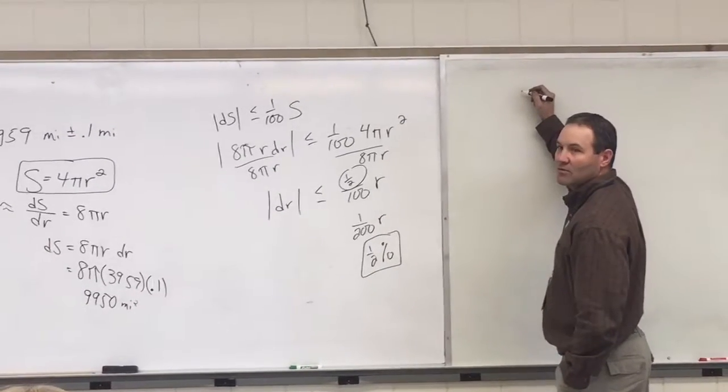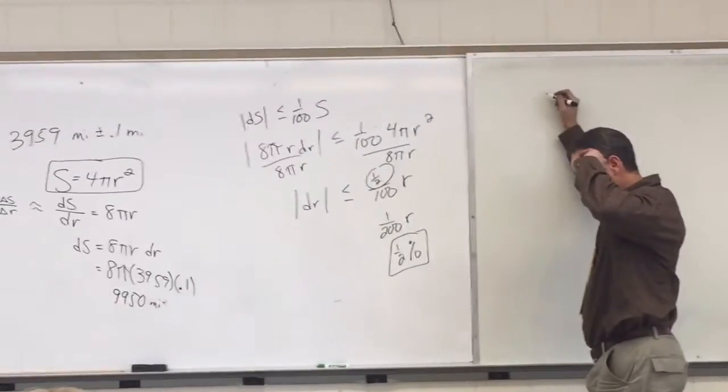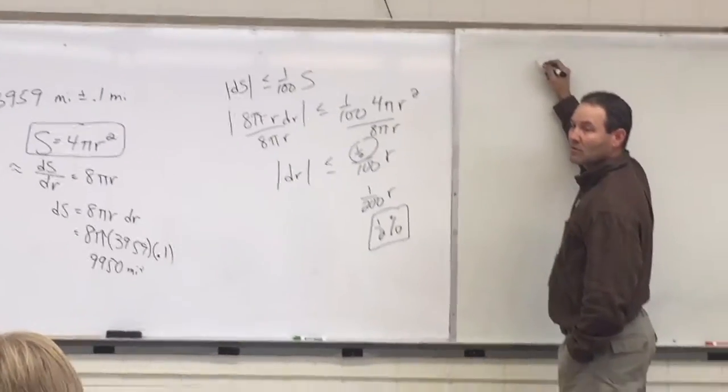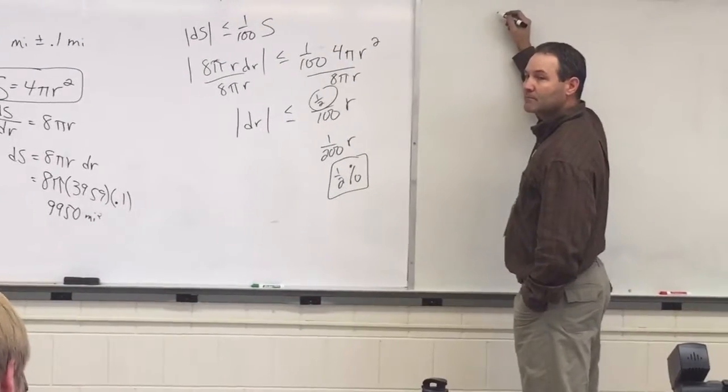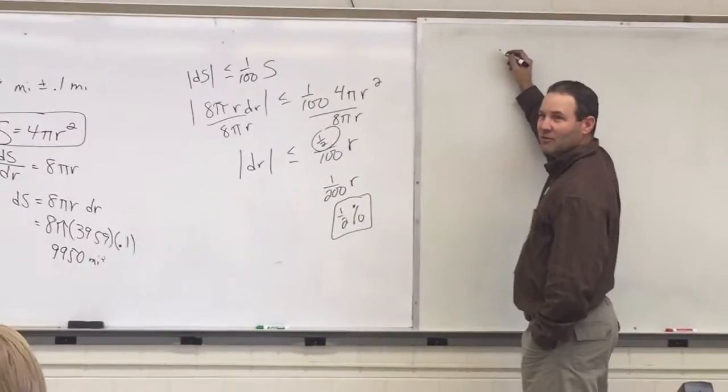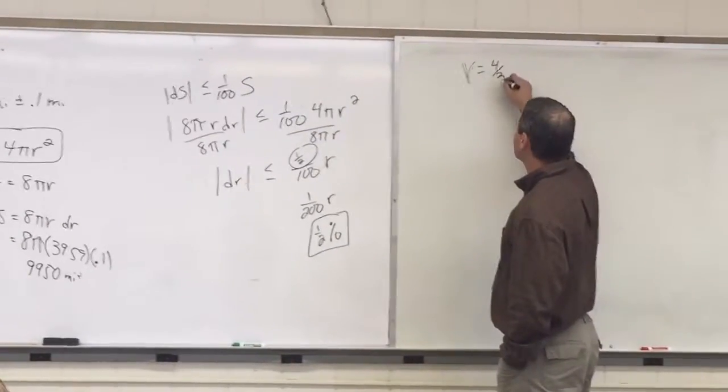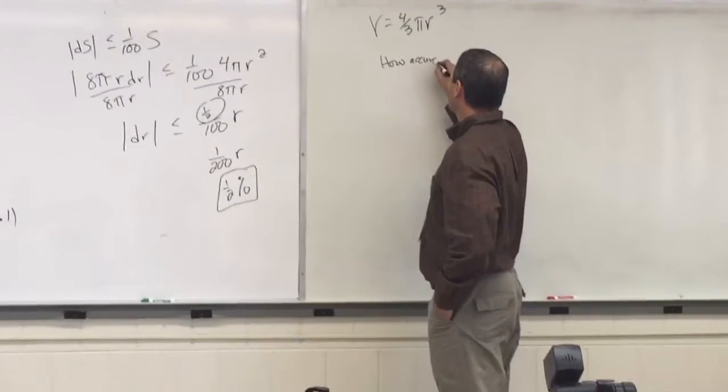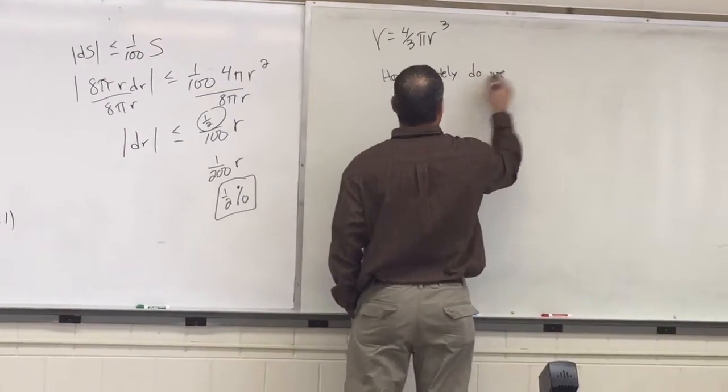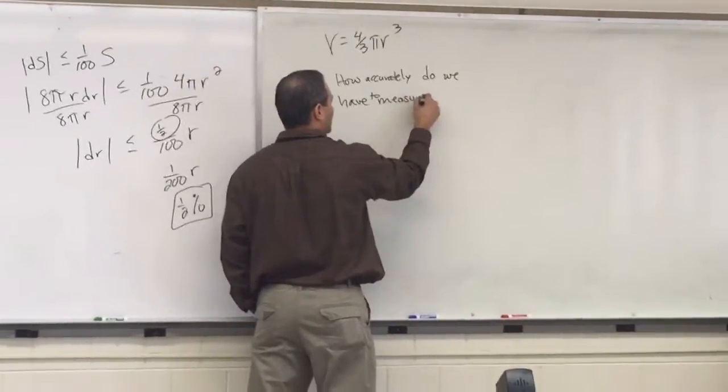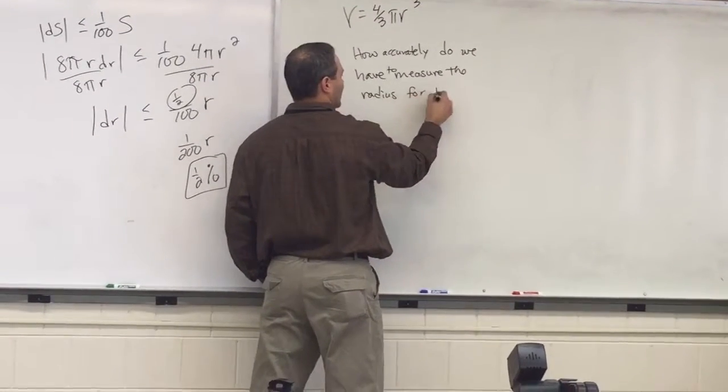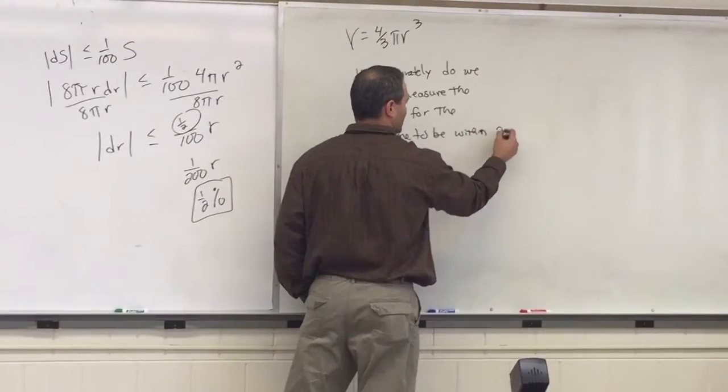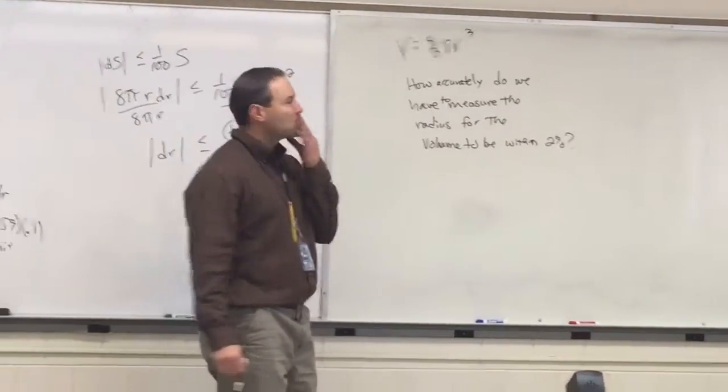So let's do... We'll do a volume. So problem 44. What is it asking you? The volume is to be calculated with an error of no more than 1% of the true value of a right circular cylinder. The height and radius of a right circular cylinder are equal. So the cylinder's volume is V equals pi height. Alright, I'm not going into that one. But we'll say volume of a sphere is 4 thirds pi r cubed. And I want to know how accurately do we have to measure the radius for the volume to be within 10 percent.